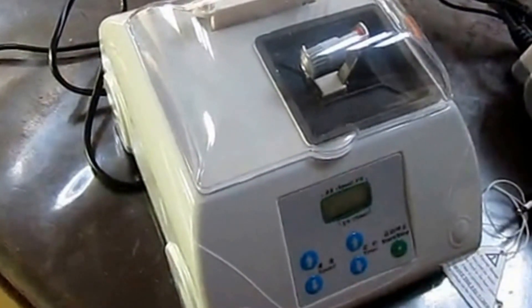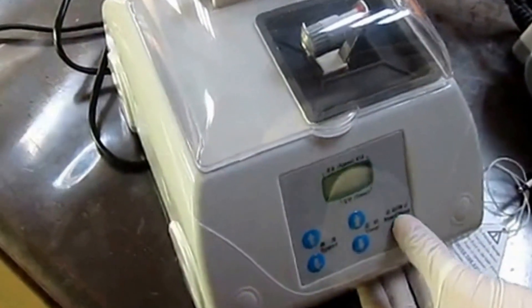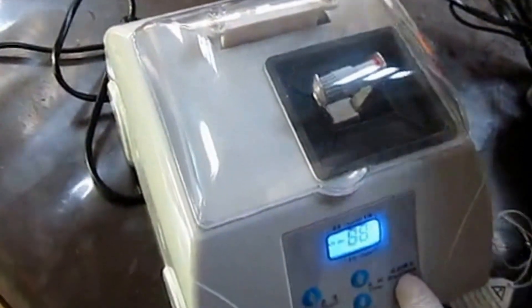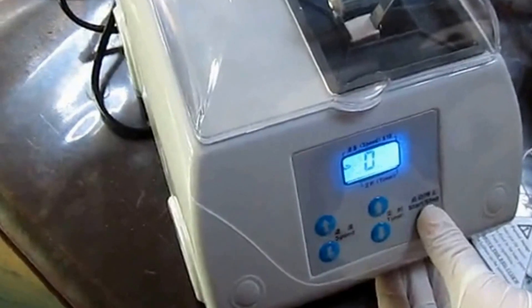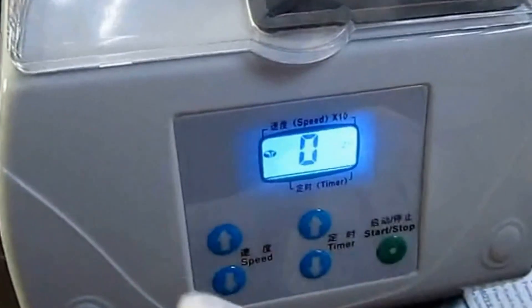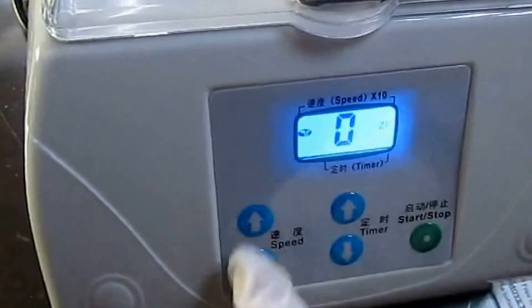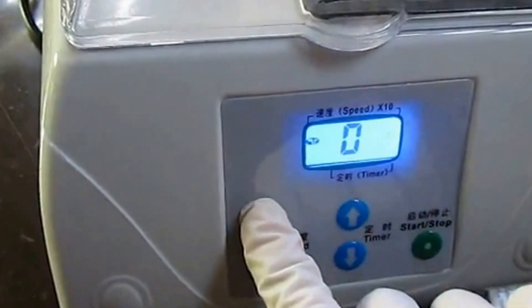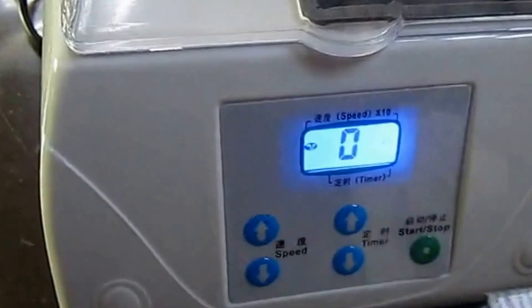In the shutdown state, press the start button and the B switch together. The screen will show O and U. Then press the start button and press speed up to switch from O to U.